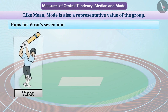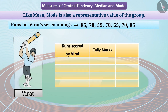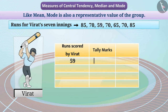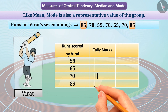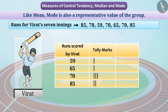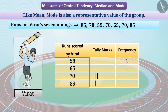Let us take the data for the number of runs for Virat's 7 innings. If we were to create a table for these runs using tally marks, we would observe that the smallest number, 59, appears only once. Similarly, we draw lines for 65; 70 appears three times, so we draw three lines against it; and 85 appears two times. From this table, we know that 70 is the most frequently observed value in this group — we can call this the mode of the group.